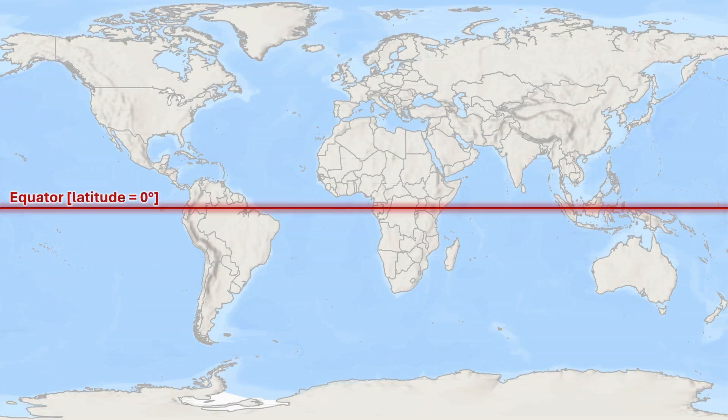The equator, of course, is a special latitude in relation to Earth's rotation as well as the origin for geographic coordinates, latitude 0 degrees.